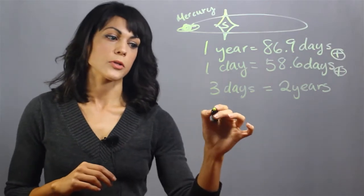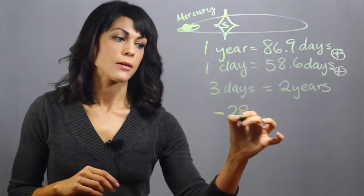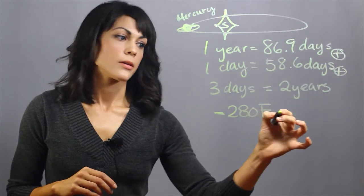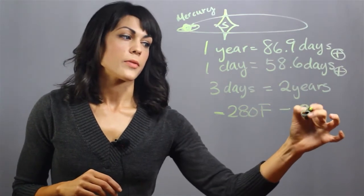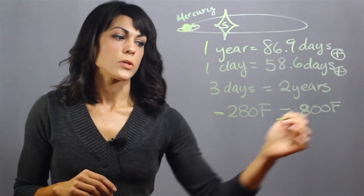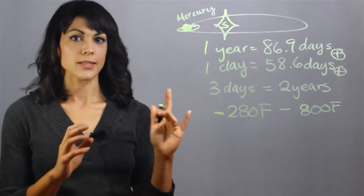That means the temperature fluctuates from minus 280 degrees Fahrenheit to 800 degrees Fahrenheit. As you can tell, it's very cold and also very hot.